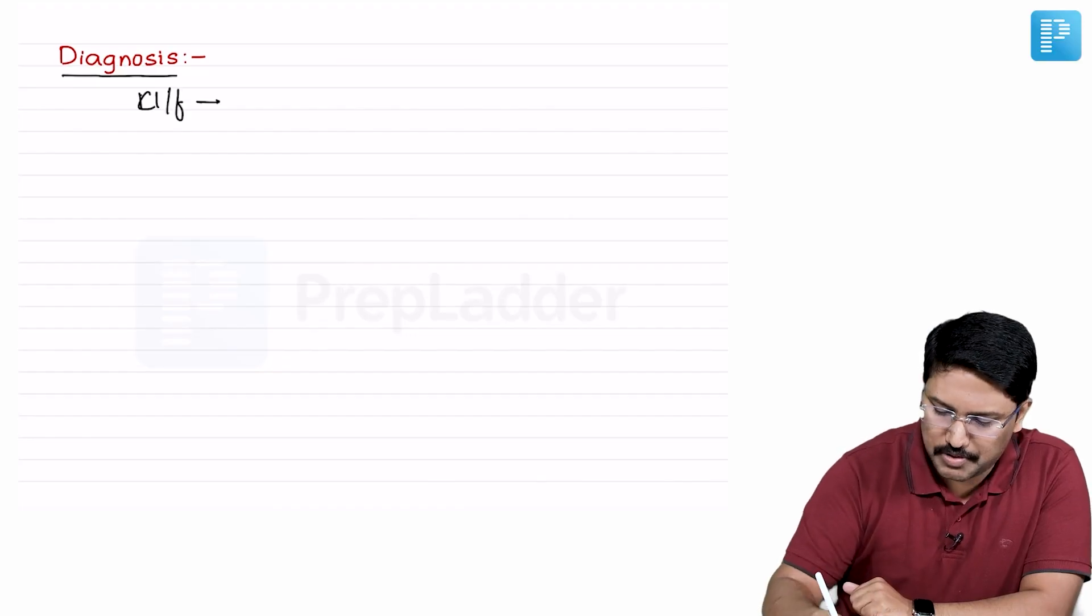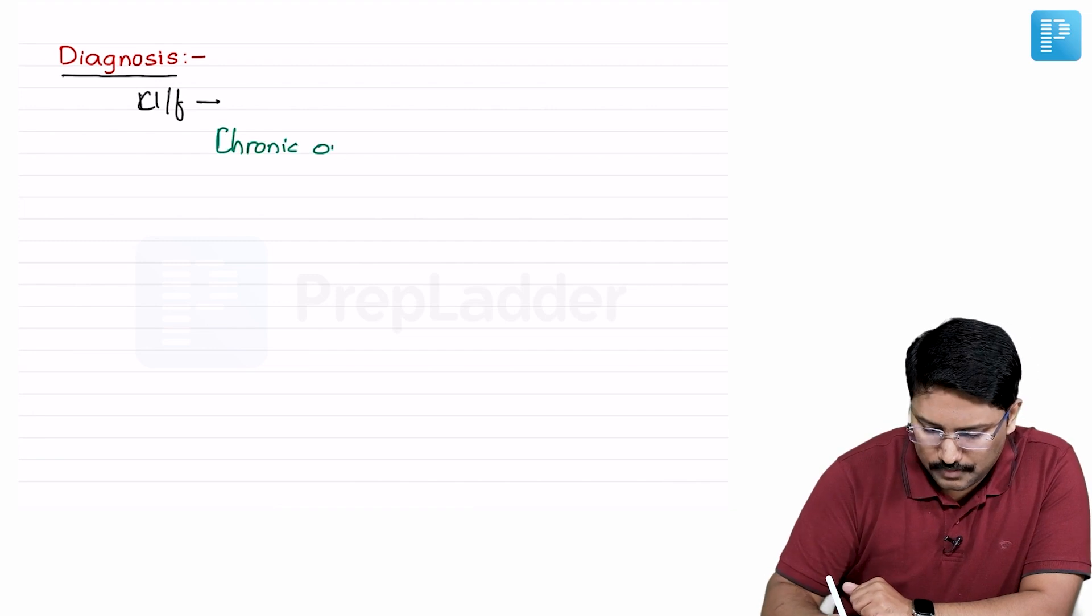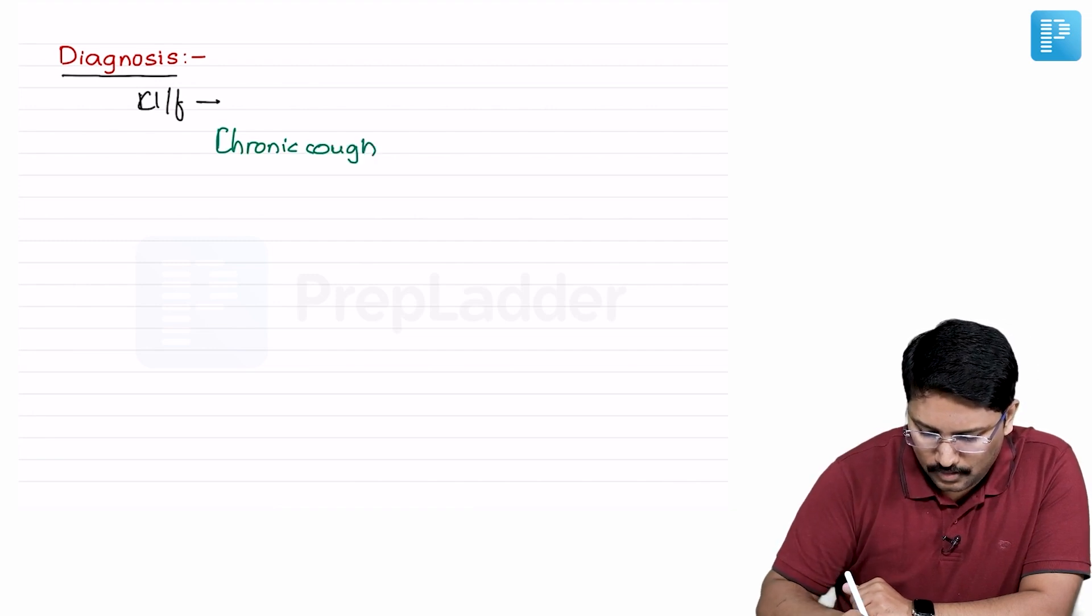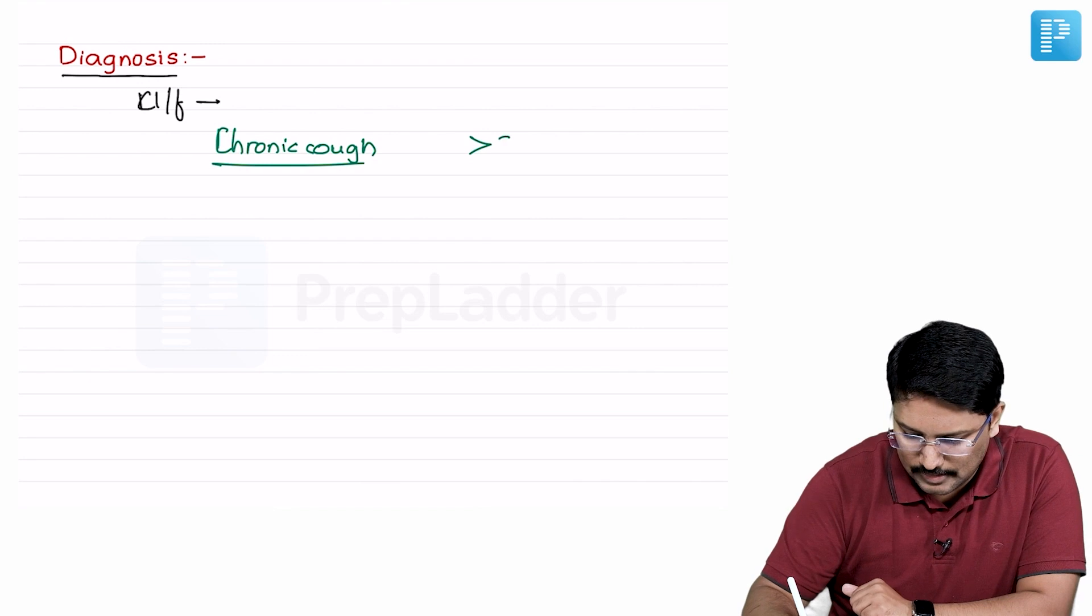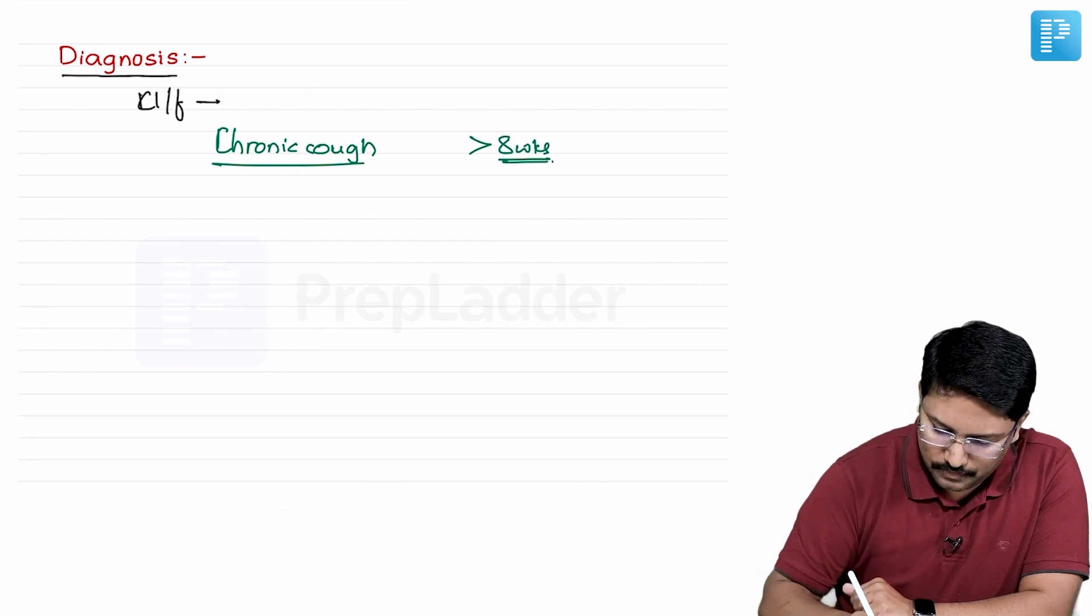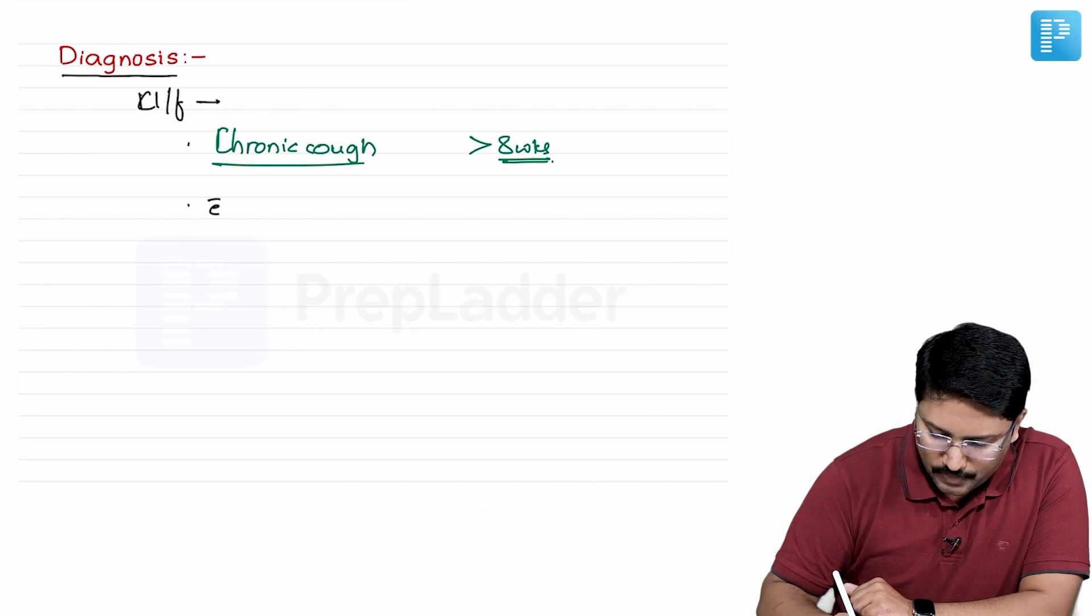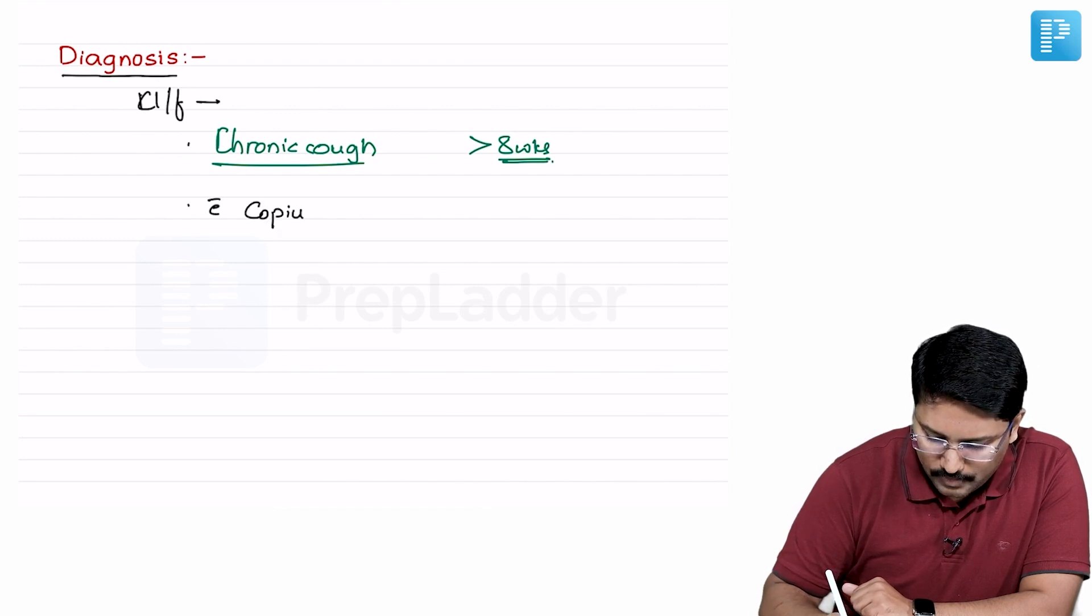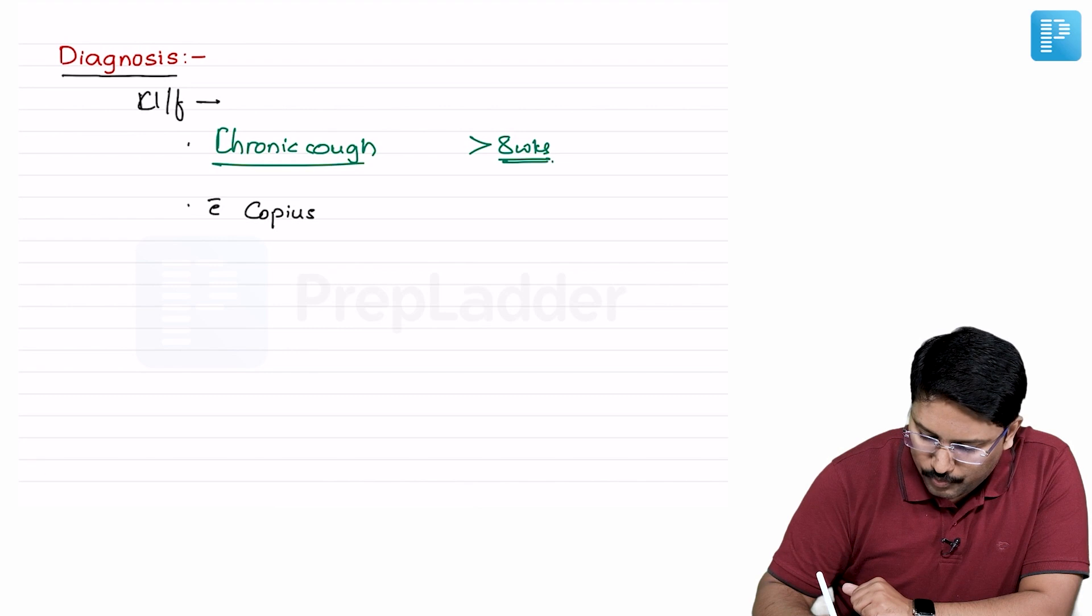With clinical features, these patients present with chronic cough. Chronic here means more than eight weeks in duration - chronic cough with copious mucus production.